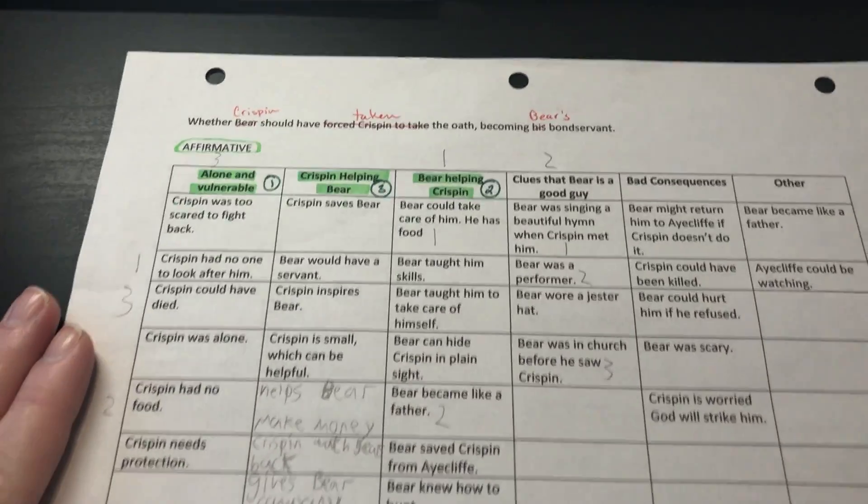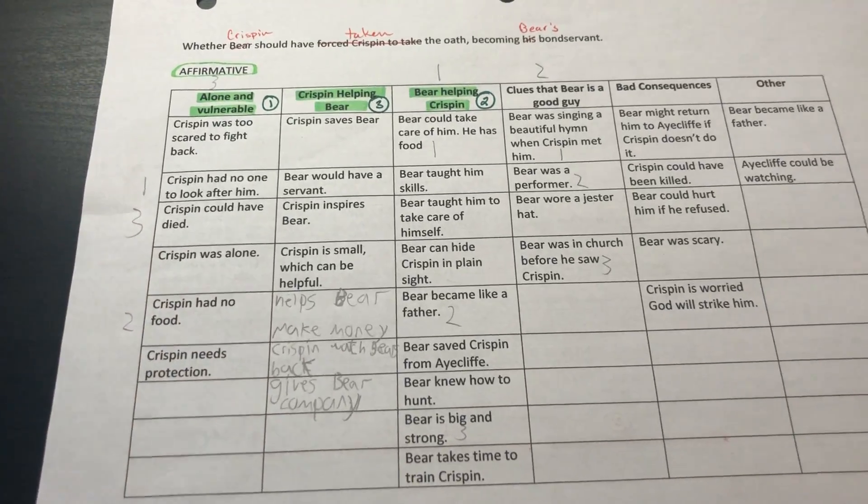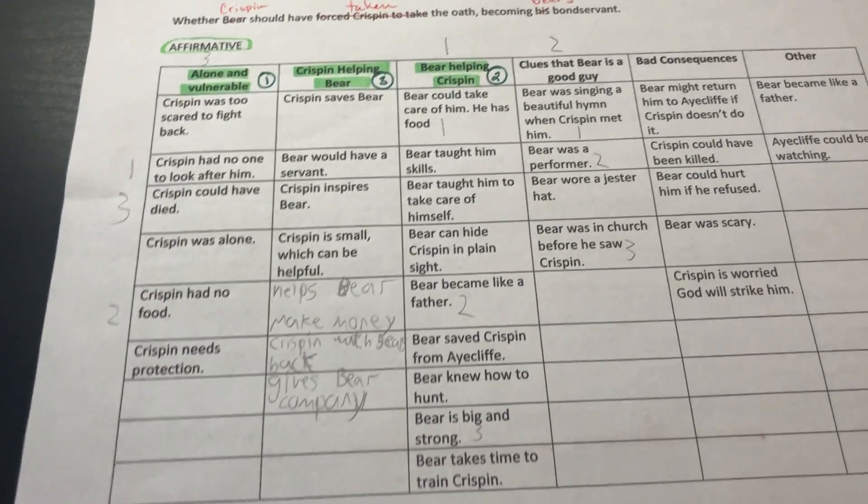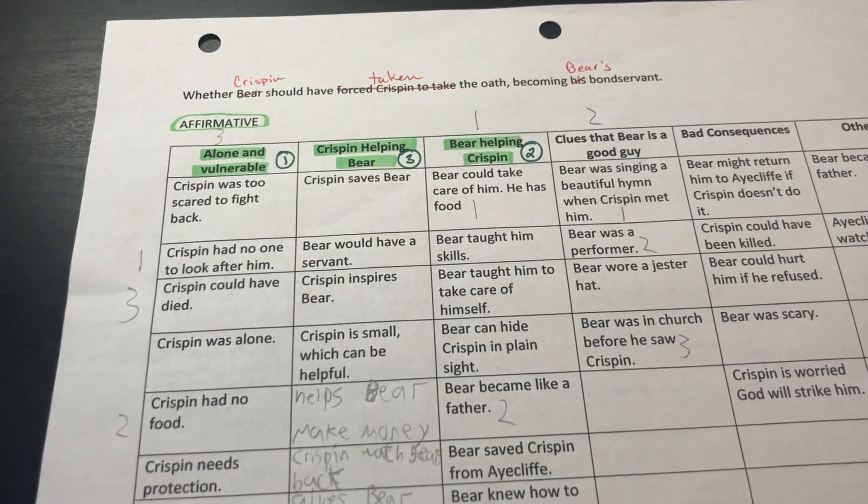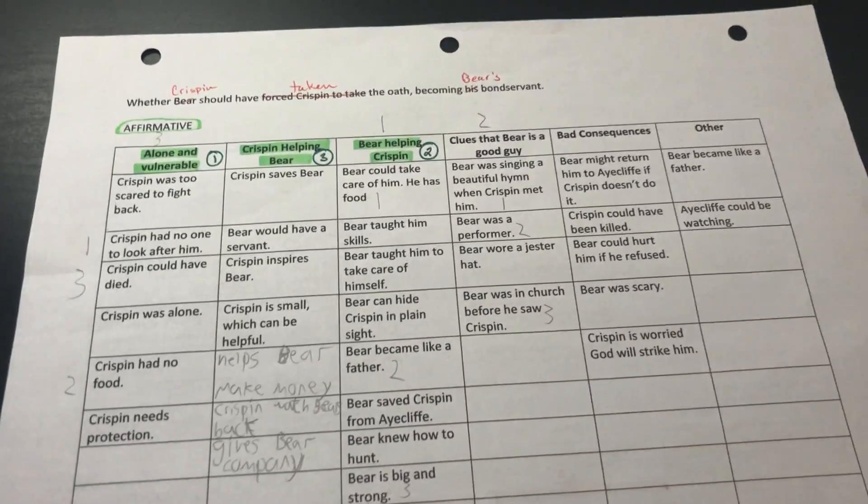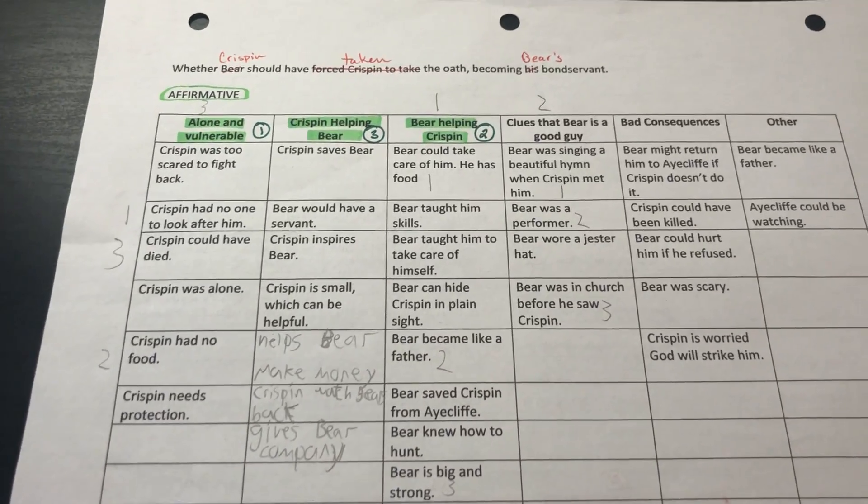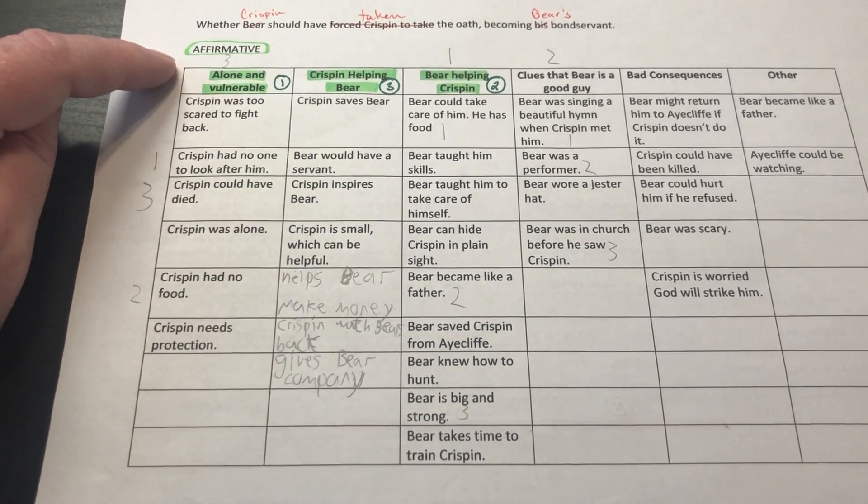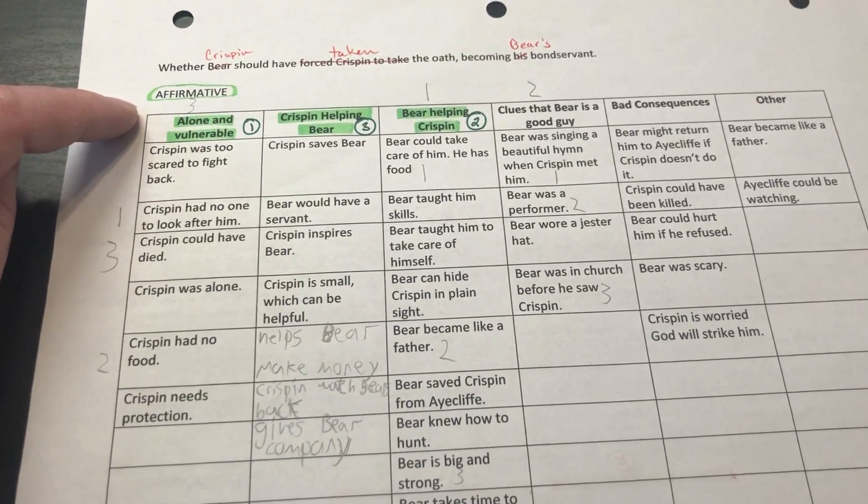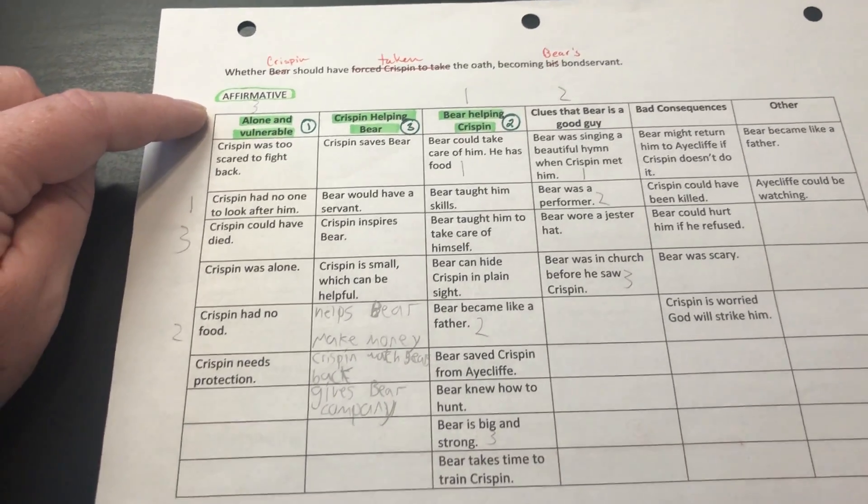This is the page that my son used in class. I had them do some stuff with it, so it's a little marked up, but that's okay. I told them, I want you guys to take this chart, and I want you to think about the reasons that we had said yes, Bear should have forced Crispin to take the oath, becoming his bondservant.